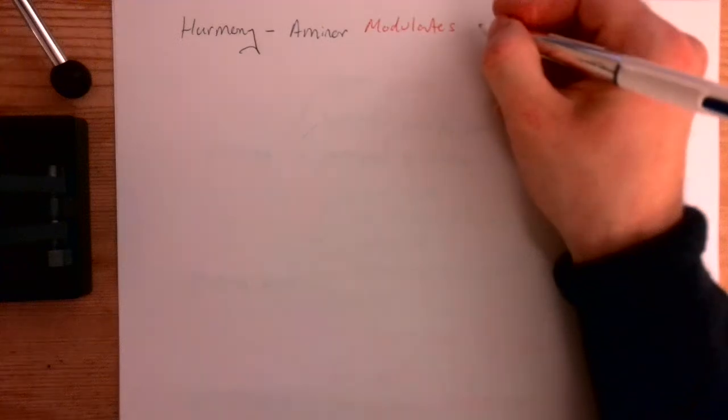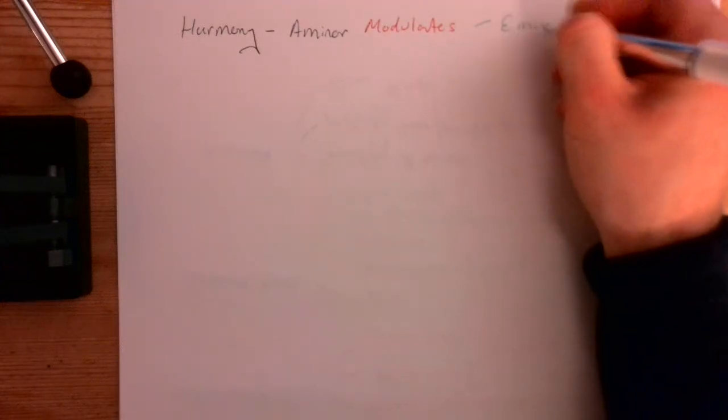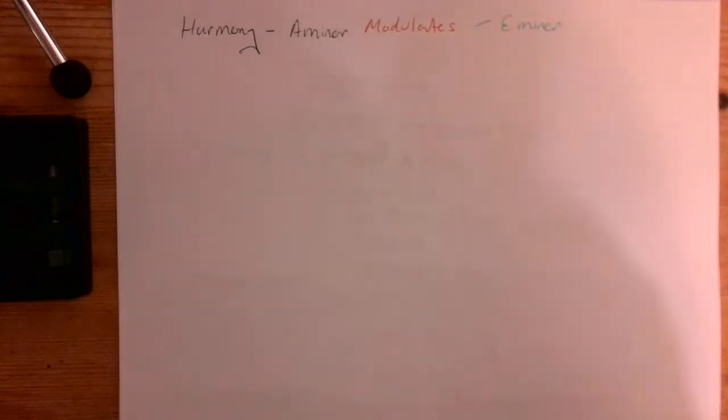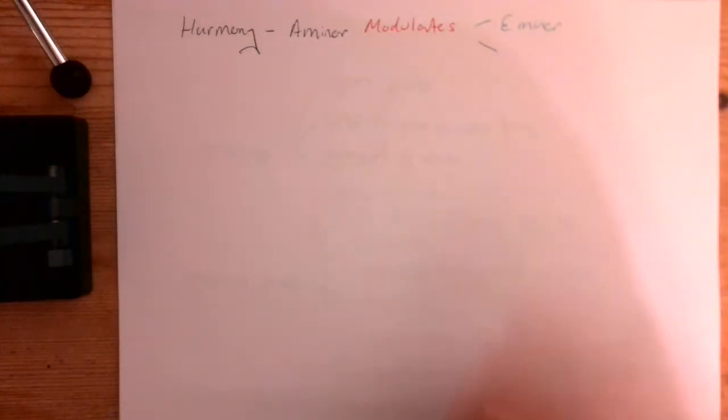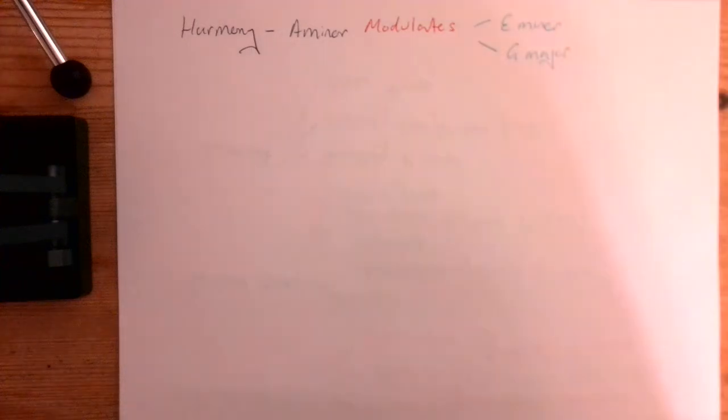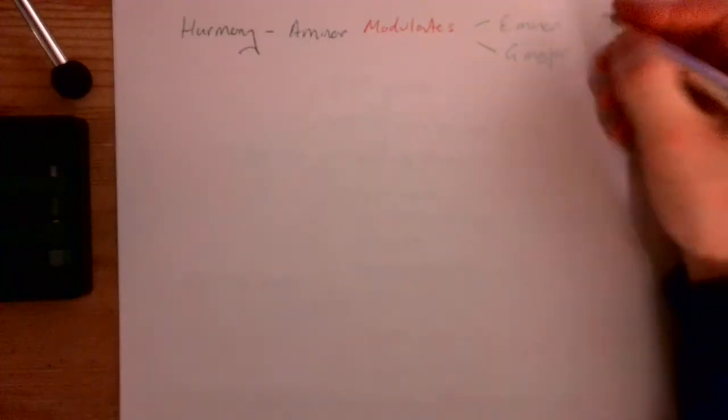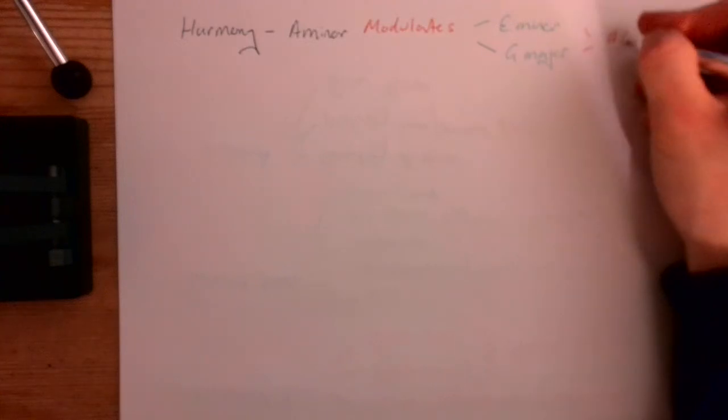So we have A minor to start with, and then it goes to E minor, which would be the dominant, because it is five notes up. And then we have G major, which will be the relative major of E minor, so shares the same key signature of one sharp, and that sharp will be F.